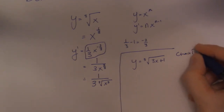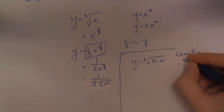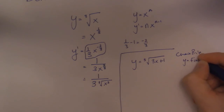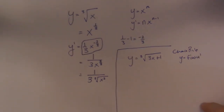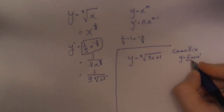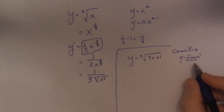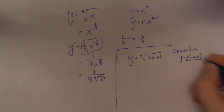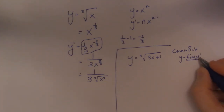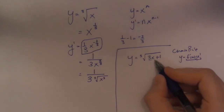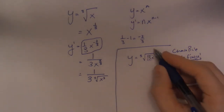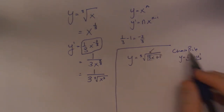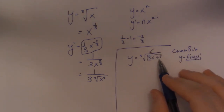So the chain rule is: y is equal to f prime of u times u prime. You have the parent function, or the outside function, whatever your teacher calls it. And then you have the inside function, u prime. The outside function is the cube root, and the inside is u prime.